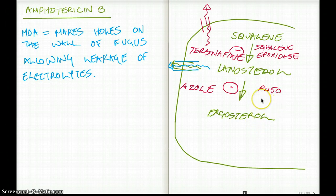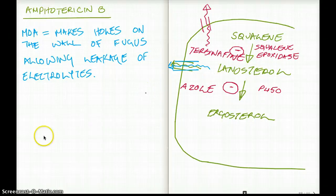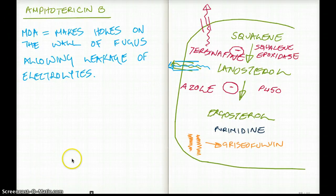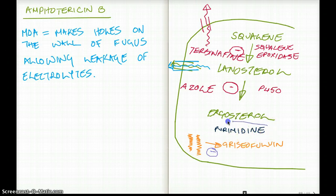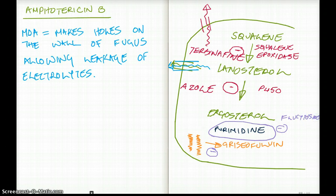But this is not the only mechanism of affecting the fungal cells or to kill fungal cells. There are other mechanisms as well. Now, there are microtubules present inside the fungus. And these microtubules can be inhibited by a drug called griseofulvin. And there is also pyrimidine that needs to be synthesized inside a fungal cell. And that is going to be inhibited by a drug called flucytosine.